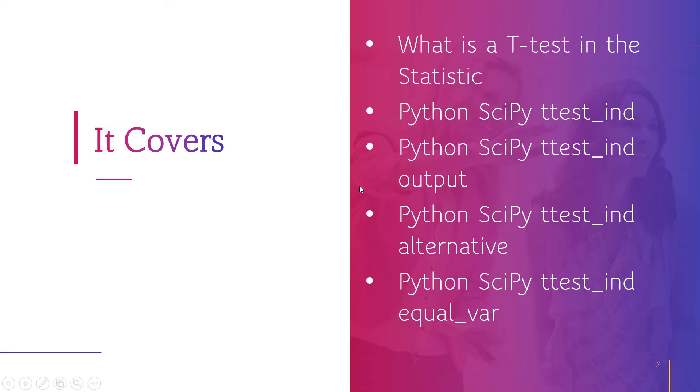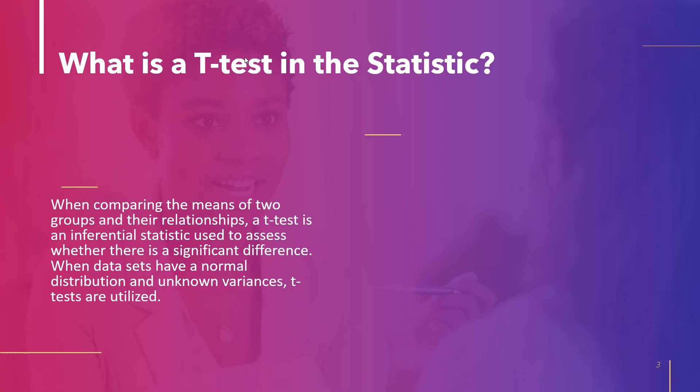Now, what is a t-test in statistics? T-tests are inferential statistics used to determine whether a difference between two group means and their association is significant. T-tests are used when datasets have a normal distribution and unknown variances. When evaluating a hypothesis, the t-test uses the t-statistic, the values of the t-distribution, and the degrees of freedom to assess statistical significance.